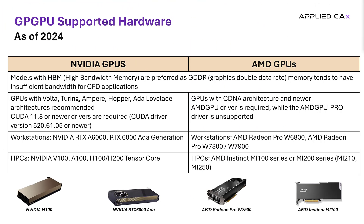Here are some recommendations for GPU hardware to ensure stable computing. The two main players are NVIDIA and AMD, with the recommended cards shown on this slide. For both manufacturers, we prefer models with high bandwidth memory to maximize performance for CFD applications. For NVIDIA cards, make sure you're using CUDA 11.8 drivers or newer, and for AMD, make sure you're using the latest GPU driver.